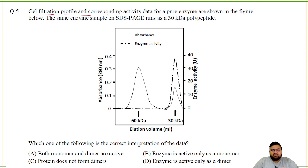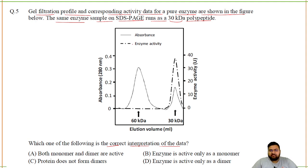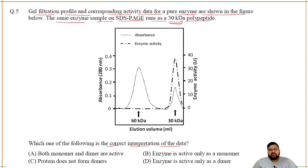Gel filtration profile corresponding to the activity of a pure enzyme is shown, and the same enzyme sample on SDS-PAGE runs as a 30 kDa polypeptide. If SDS-PAGE shows only one band at 30 kDa, the enzyme is active only as a monomer — meaning it is not composed of multiple different monomeric units. The correct interpretation is: the enzyme is active only as a monomer.